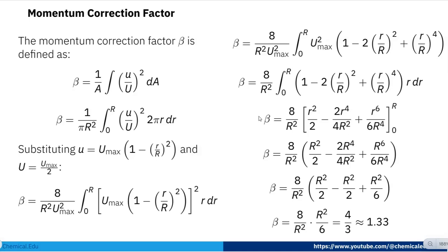Next, we calculate beta, the momentum correction factor. Beta is defined as β = (1/A) ∫ (u/U)² dA. Substituting A = πR², dA = 2πr dr, and U = u_max/2, and expanding using the (a − b)² formula, we integrate and apply the limits. After simplification, β = 1.33. So the momentum correction factor is 1.33 and the kinetic energy correction factor alpha is 2.0.